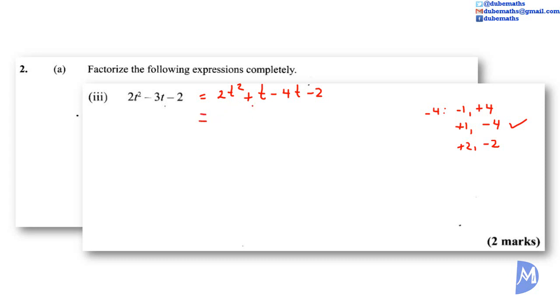The HCF of 2t squared and t is t. We multiply t by 2t to get 2t squared and multiply t by 1 to get positive t. We force the same thing in brackets. 2t multiplied by negative 2 will give negative 4t. Negative 2 by positive 1 is negative 2. And we factorize by HCF again. Common to both terms is 2t plus 1. And we multiply by t to get t by 2t plus 1, and we multiply by negative 2 to get negative 2 by 2t plus 1. And that's the answer we're looking for for this one.